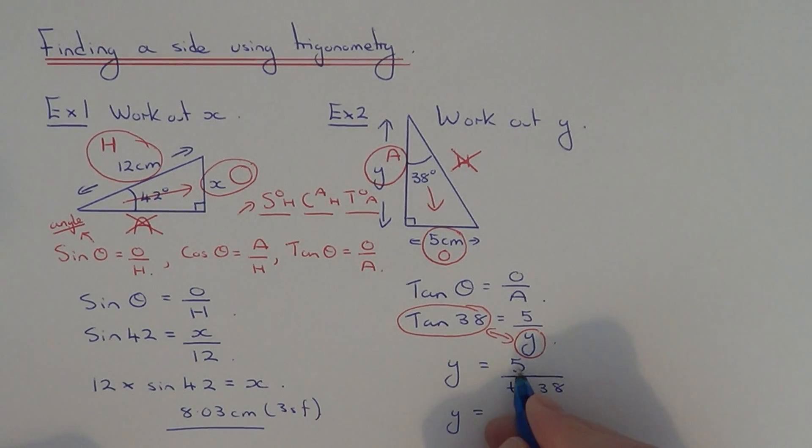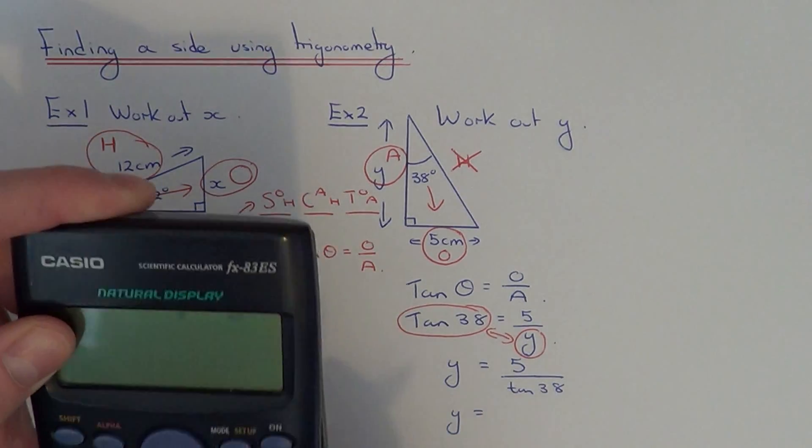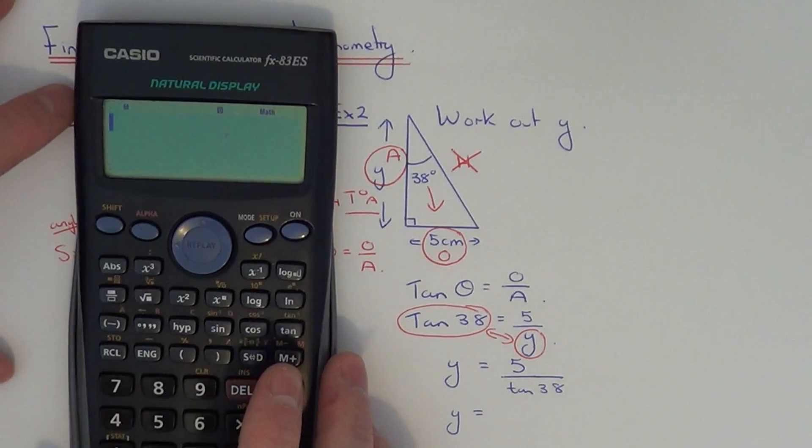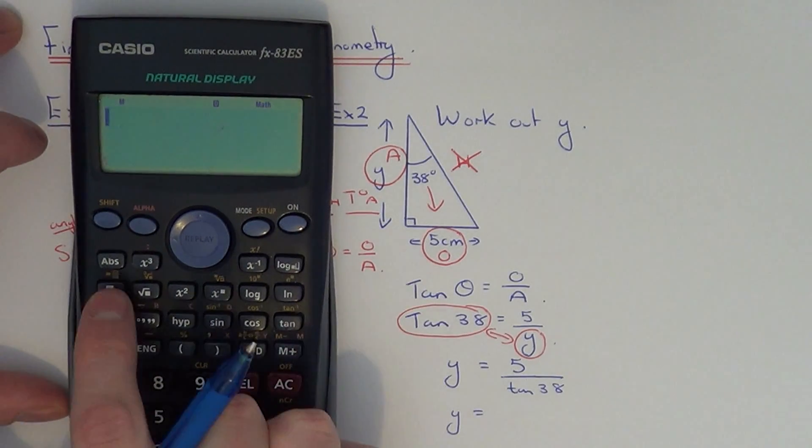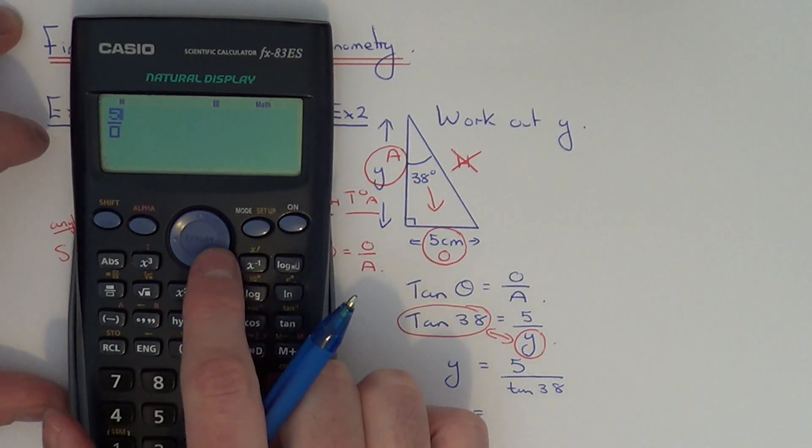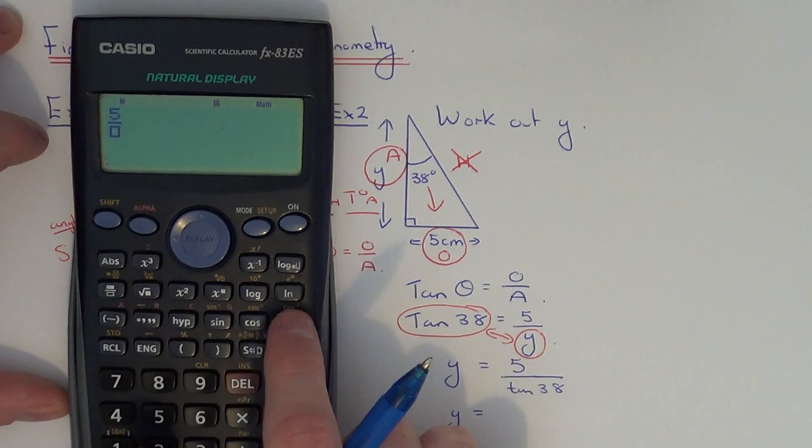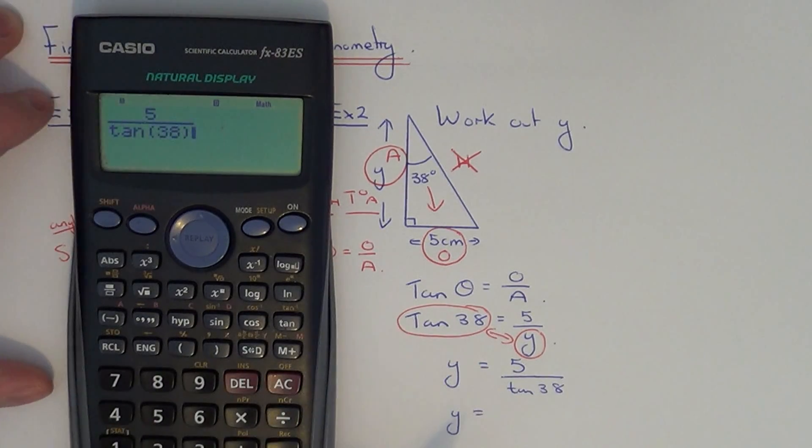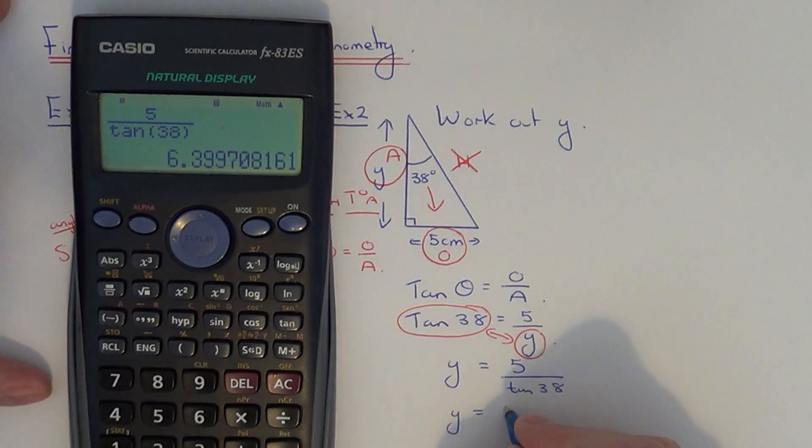So to work out y, we need to do 5 divided by tan 38. If you get your scientific calculator, we can use our fraction button here. We do 5 over tan 38. Make sure you close your bracket. And that gives you 6.40 centimeters to 3 significant figures.